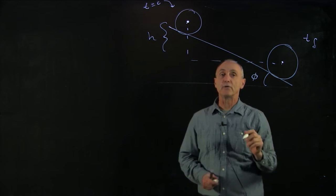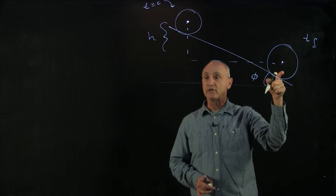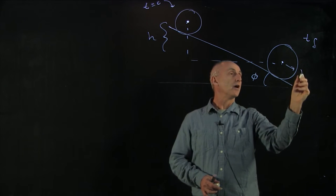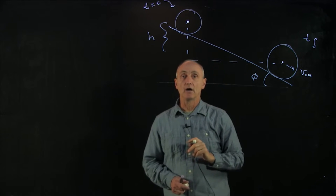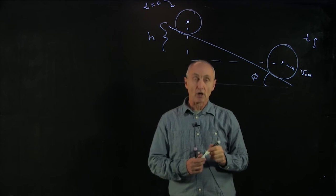And now let's figure out what is the velocity of the center of mass of the wheel when it gets to the bottom. And we are now going to apply our energy arguments.